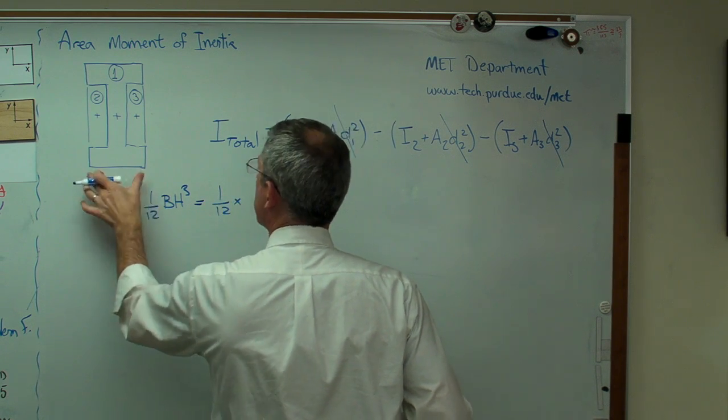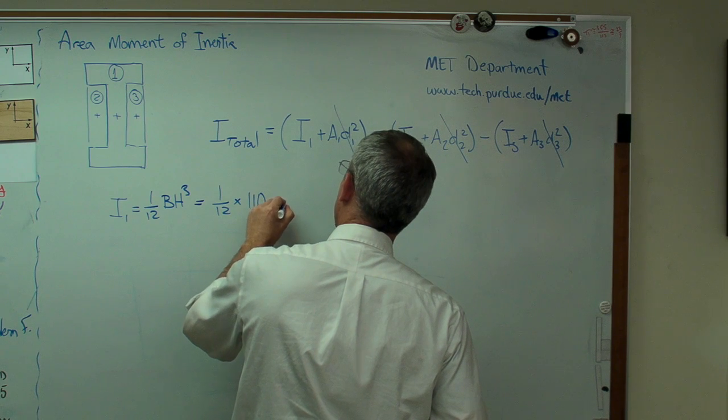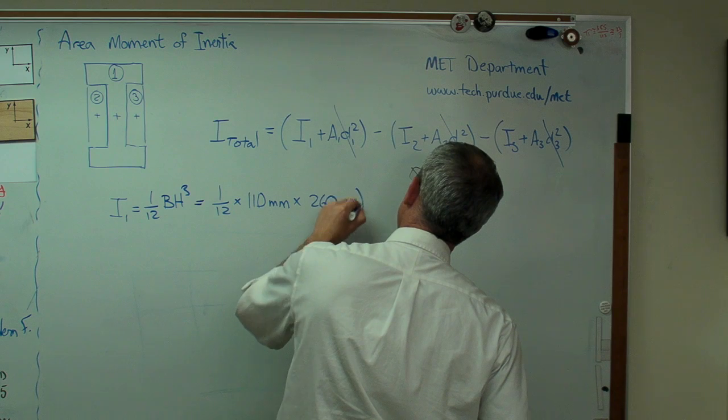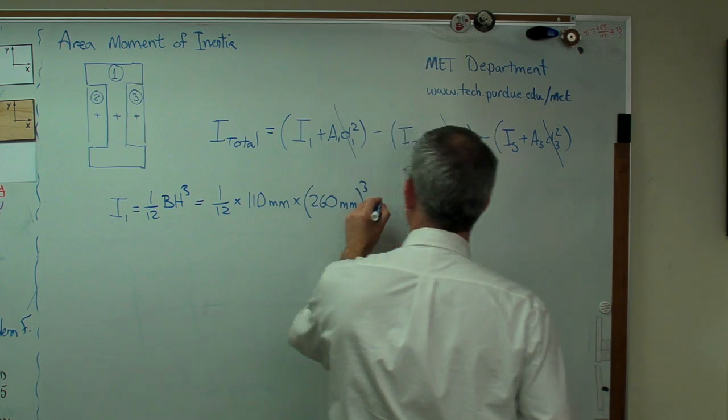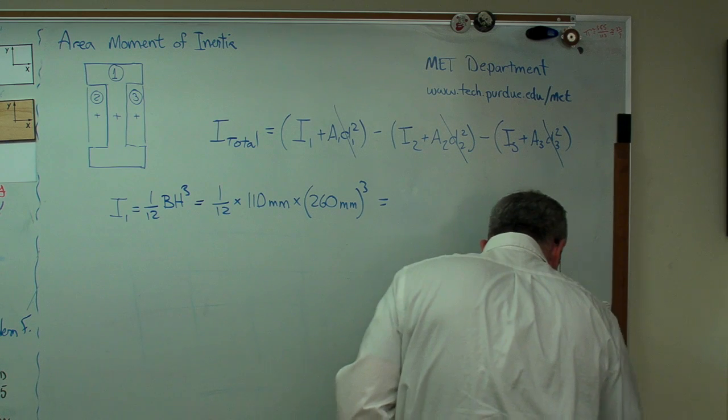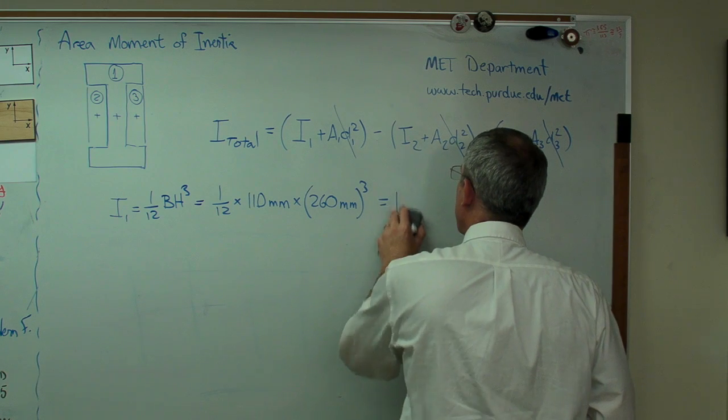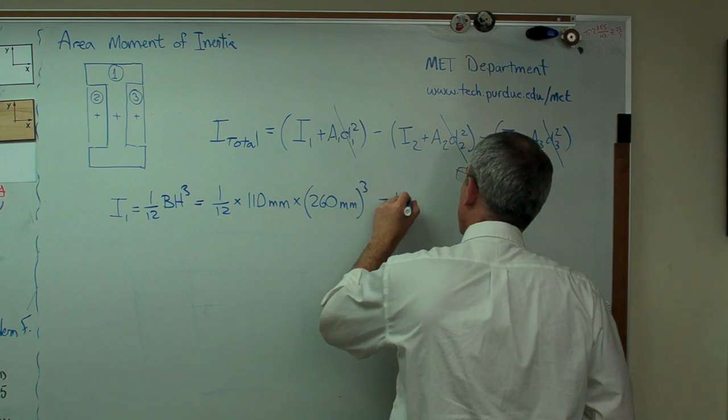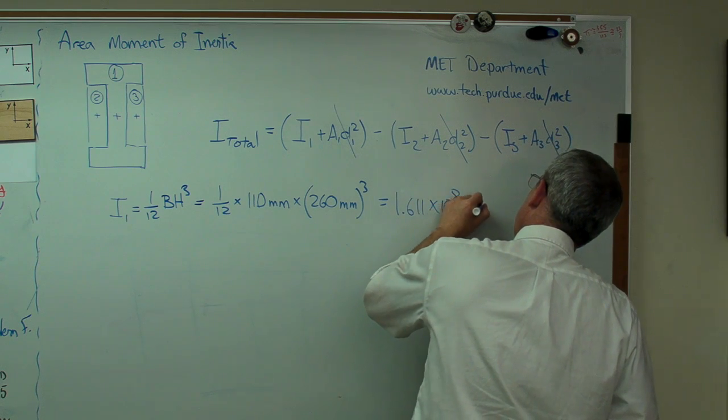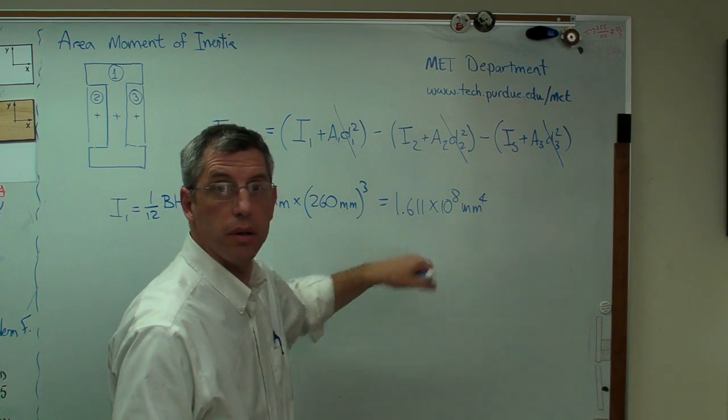So it's 1 over 12, the base is 110 millimeters, and the height is 260 millimeters cubed. That works out to be 1.611 times 10 to the 8 millimeters to the fourth. That's a huge number, 161 million.